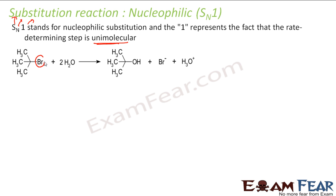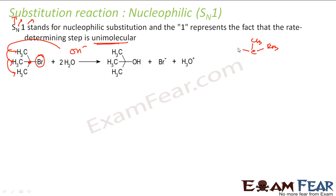For example, Br minus is the rich and powerful group. Even if OH minus is trying to attack, because of steric hindrance OH minus can't attack from here. The attack has to be done on this carbon, but we have bulky CS3 groups on both sides — it's like security guards — so OH minus is not able to attack.